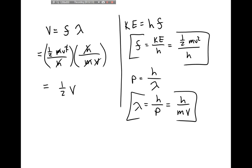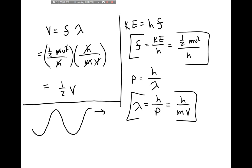Why doesn't this work? The formula v = fλ was derived for a very specific type of wave — sinusoidal waves. Even for a de Broglie wave, if you had a sinusoidal de Broglie wave, this equation would still hold. But when we talk about particles, particles are not described by sinusoidal waves — they're described by distributions that look like wave packets.